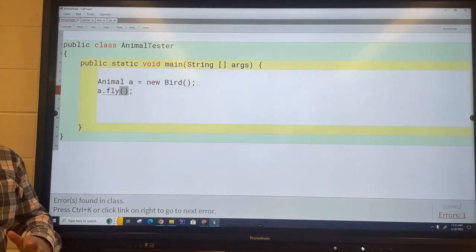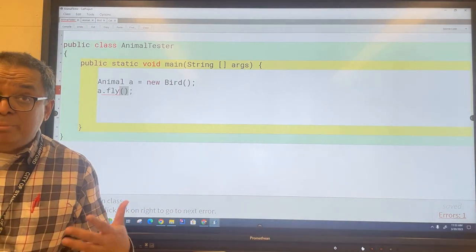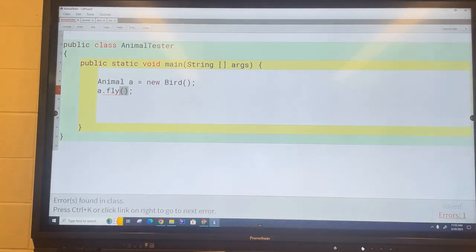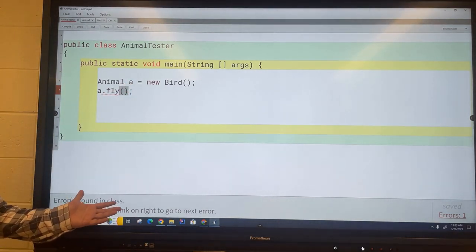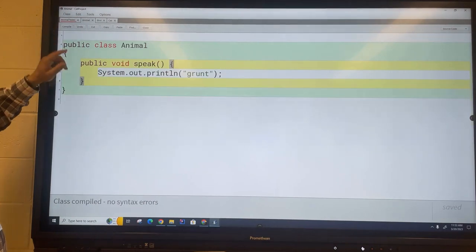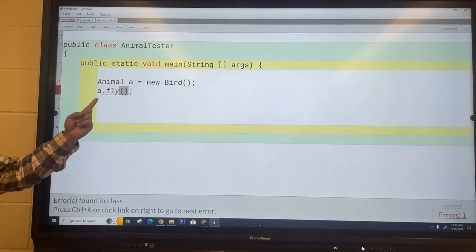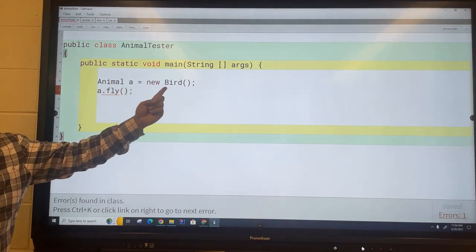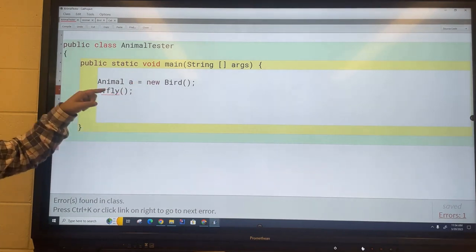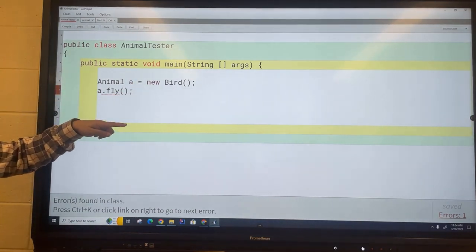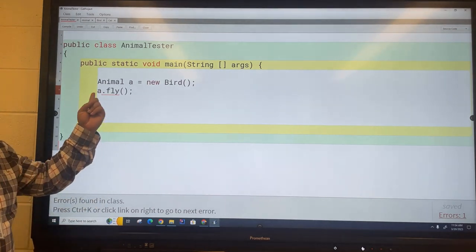Now look what happens when I ask it to fly. The compiler at compile time asks does the animal know how to fly. What's the answer? The answer is no. See here's the problem the compiler has. At compile time the compiler can't tell necessarily what kind of object you're pointing to because yeah it's declared to be bird here but you could have changed it somewhere else.